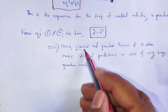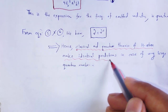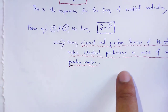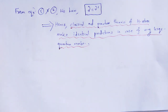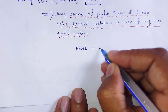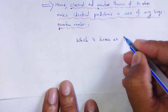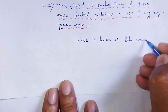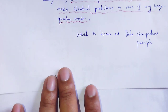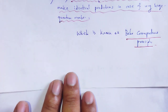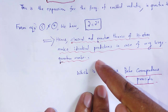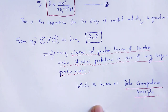This indicates that classical and quantum theories of hydrogen atom make identical predictions in the case of very large quantum numbers. In classical theory and quantum theory, the radiated energy expressions are both the same. This is known as Bohr's correspondence principle — in the large quantum number limit, quantum theory corresponds to classical theory.